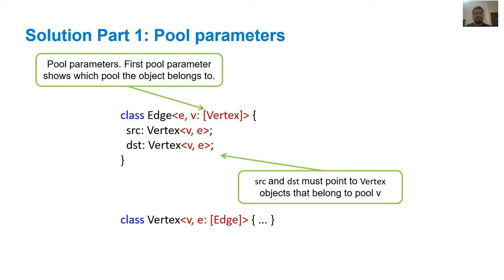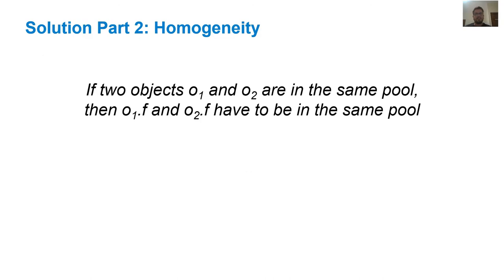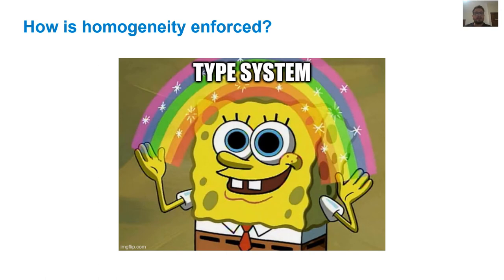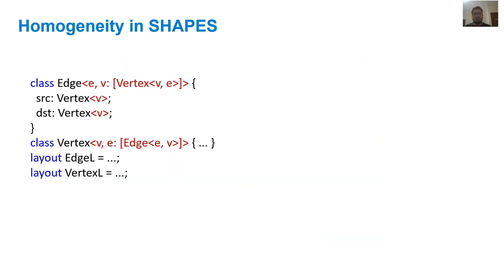Pool parameters are one part of the equation of statically knowing the pool an object belongs to. The second and most important part is that of a concept we call homogeneity. The basic idea behind homogeneity is that if you have two objects, O1 and O2, that are placed inside the same pool, then objects O1.f and O2.f must be also placed inside the same pool. So how does Shapes enforce homogeneity? Well, unfortunately we'll have to hand wave this answer and only say, in a nutshell, type system. But the general gist is that the bounds of pool parameters that specify the type of objects a pool parameter holds are also enriched with pool parameters. Our type system will take these pool parameters in bounds and will be able to detect if homogeneity is somehow violated.